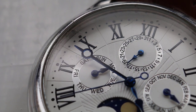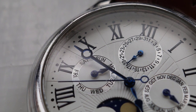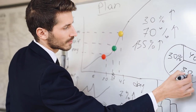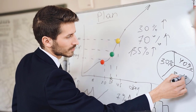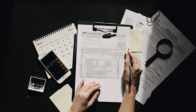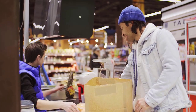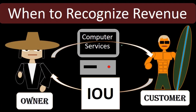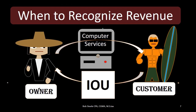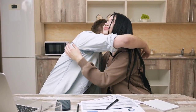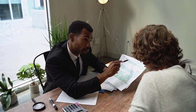There are times when accounts receivable may not be collectible, and we will talk about how to deal with that later. For now, recognize that we record accounts receivable as an asset at the point in time the sale is made — when the work has been completed. The invoice sent to the client is usually the documentation that tells us to record this transaction.